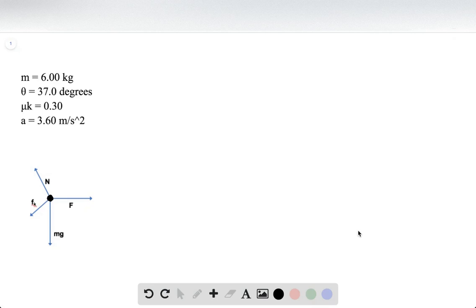This is question 5.72. We have a 6-kilogram box sitting on a ramp inclined at 37 degrees. The coefficient of kinetic friction between the box and the ramp is 0.3. A horizontal force is applied, and the box is moving up the incline with a constant acceleration of 3.6 meters per second squared.